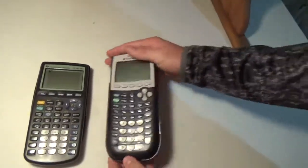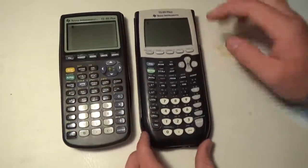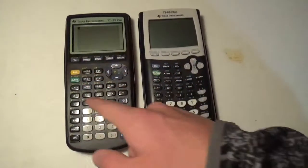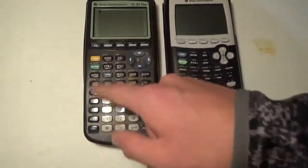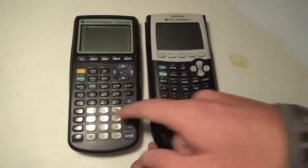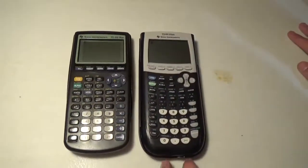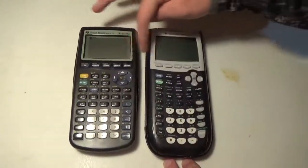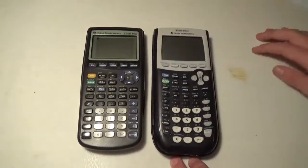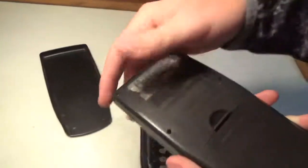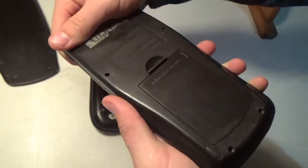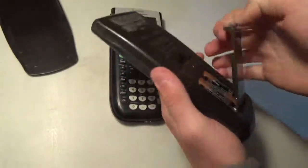All the buttons really are in the same spots - the number pads, operations, the menus are up here, trig functions, miscellaneous things like inverses, squares, logs, natural logs. Everything's pretty much in the same spot. The d-pad is up here, all the graphing buttons are all the same. This one was manufactured in 1999. Here's the battery pack in this one.